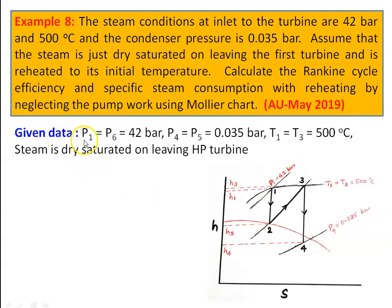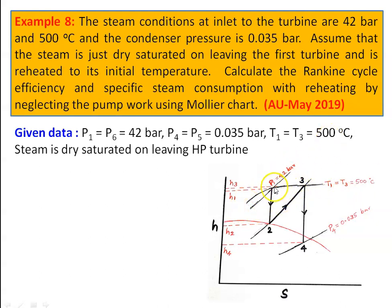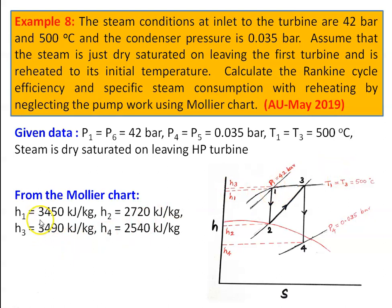For the inlet of the high pressure turbine, pressure P1 = 42 bar and T1 = 500°C. Locate the pressure line at 42 bar and the temperature line at 500°C — these intersect at point 1. Corresponding to point 1, the enthalpy H1 = 3450 kJ/kg. Draw a horizontal line and read the enthalpy. For expansion in the high pressure turbine, 1 to 2, draw a vertical line — this is reversible isentropic expansion, so entropy is constant.